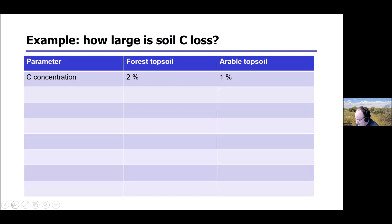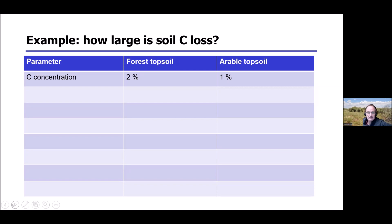I would like to practice this with a simple example using realistic carbon concentrations, though the exact numbers are fictitious. It's a typical example of what happens when you convert a forest topsoil to an arable soil — you deforest, remove the trees, and use the land as arable land. You might measure two percent carbon in the former forest topsoil, and after about 20 years only one percent in the arable topsoil. The question is: how much carbon did you lose?